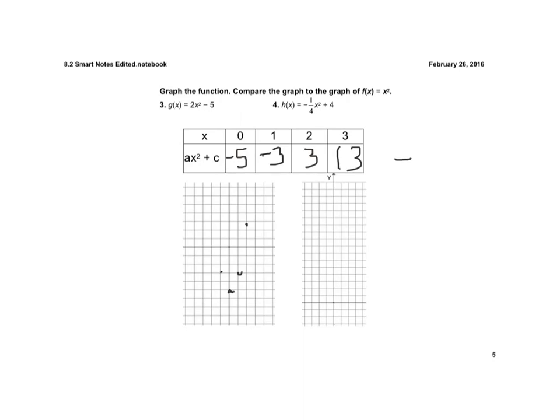So now I just find my points that are symmetrical and I graph it. Now notice because of that 2 in front of the x squared, it's narrower, but it's also shifted down 5 units.